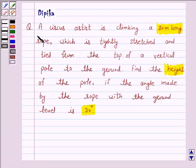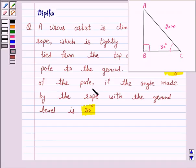Let's discuss the question which says: A circus artist is climbing a 20 meter long rope which is tightly stretched and tied from the top of a vertical pole to the ground. Find the height of the pole if the angle made by the rope with the ground level is 30 degrees.